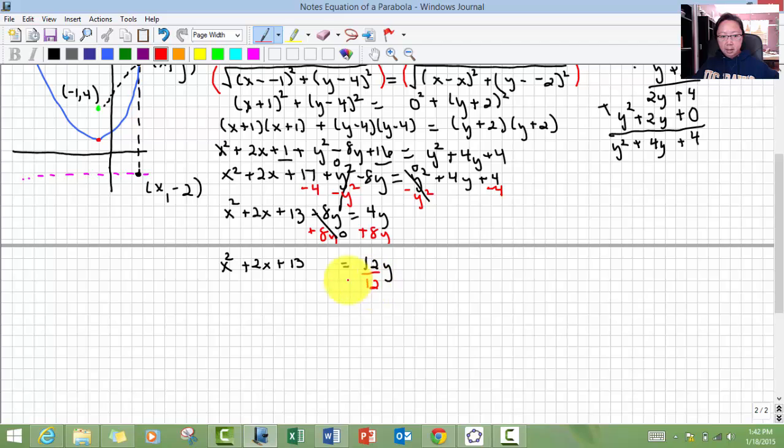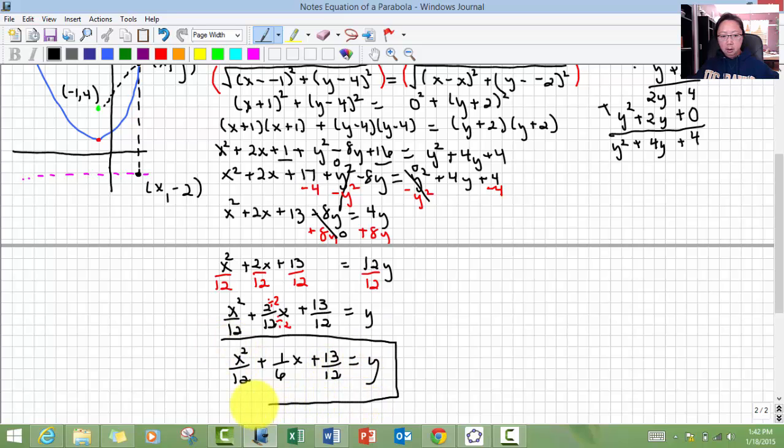The final equation is x squared over 12 plus 2 over 12x plus 13 over 12 equals y. Now if there are any fractions that you need to simplify, that can be reducible, you need to reduce. And this one can be right here. If I just divide everything by 2, then it's simplifiable. x squared over 12 plus 1 over 6x plus 13 over 12 equals y. There's your standard equation for that parabola.